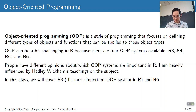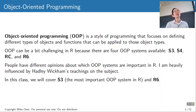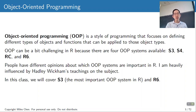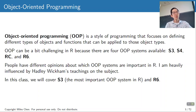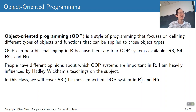There's kind of a lot of stuff to talk about — we're getting into programming aspects of R. Object-oriented programming is a style of programming that focuses on defining different types of objects and functions that can be applied to those objects. R is a little bit quirky — we actually have four different OOP systems available, which is like three more than most other languages have.